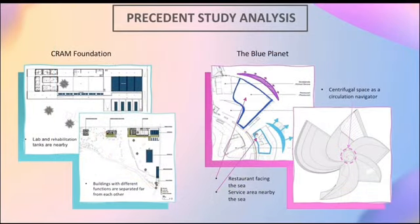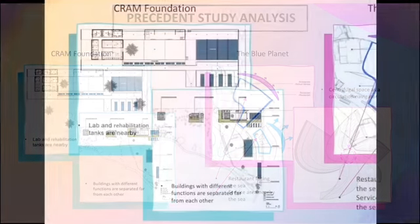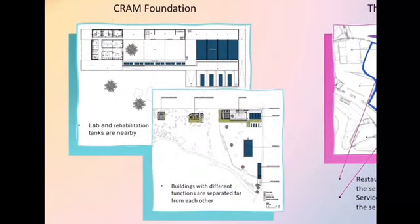Next is the Precedent Study Synthesis. The first Precedent Study is Crane Foundation. According to the floor plan of this building, the lab and the rehabilitation tanks are connected by a courtyard. However, the lab and the rehabilitation tanks can be nearer or adjacent to each other for easy access for the staff to check up on the critters. Secondly, spaces with specific functions are separated far from each other which consumes more energy to access them. Therefore, it is suggested to combine these separated spaces with different functions into one building for easy circulation and access.